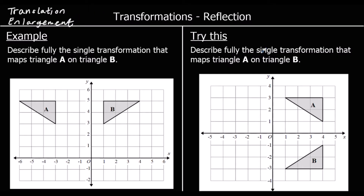We can have a rotation, which is where we rotate a shape — we spin it around. Or we can have a reflection, which is where a shape is reflected across a mirror line. It's mirrored.